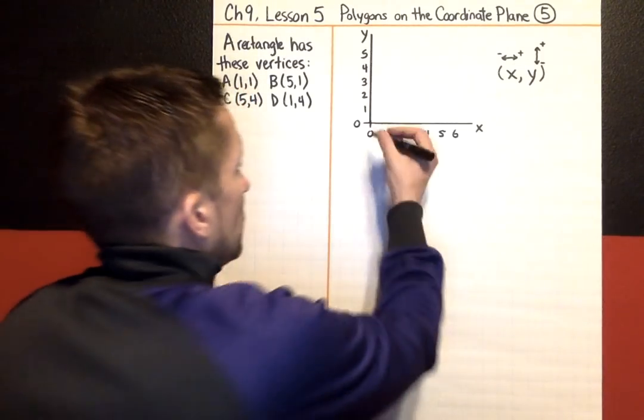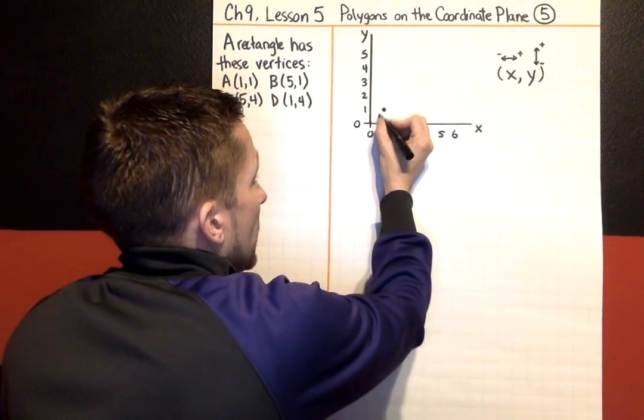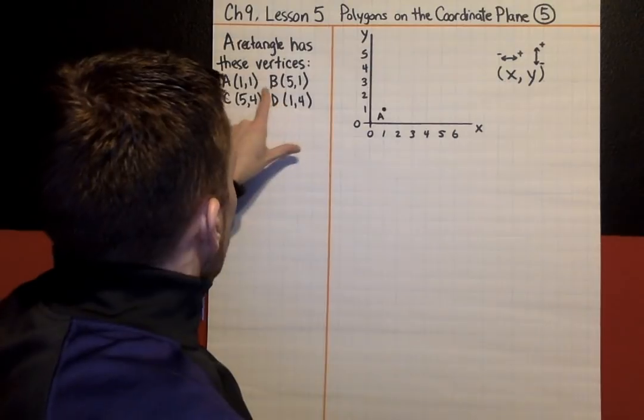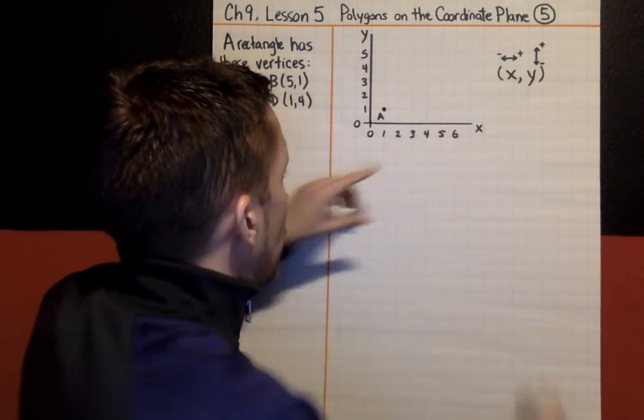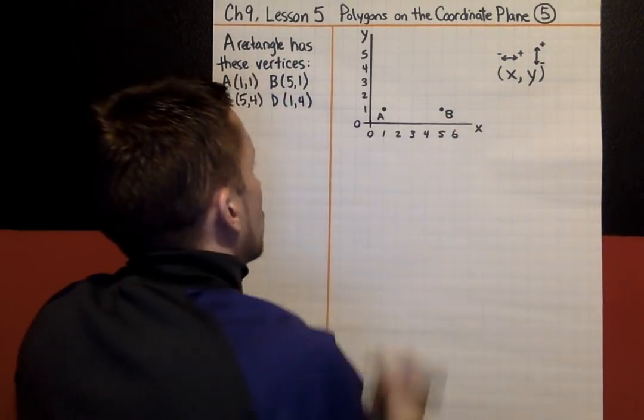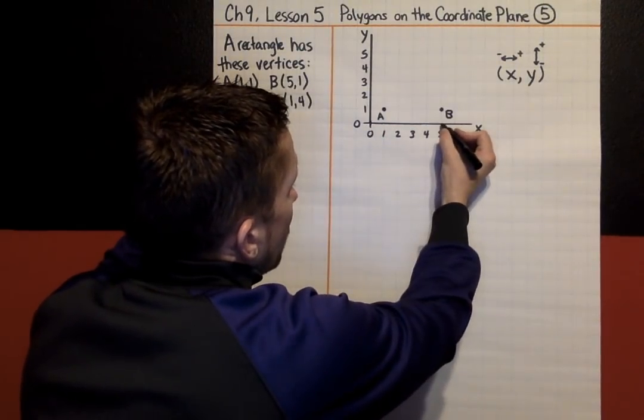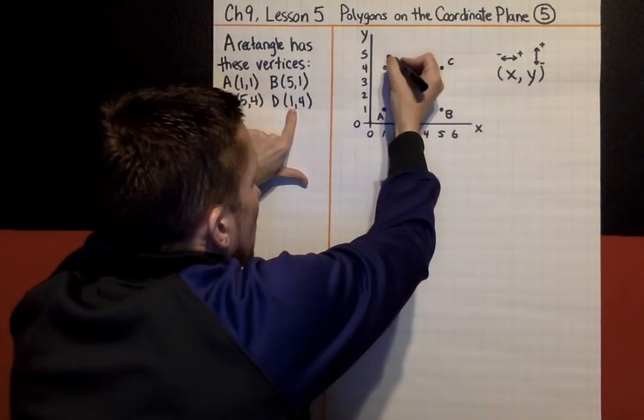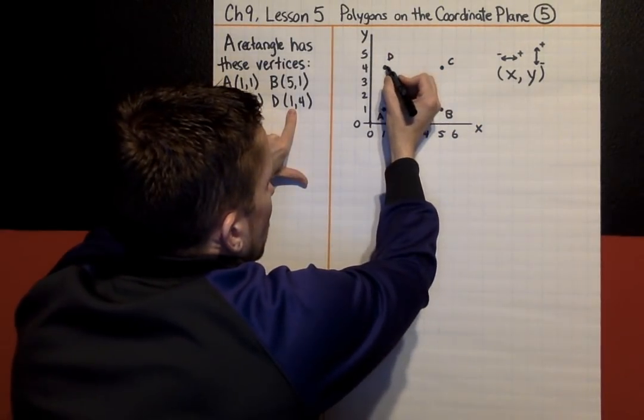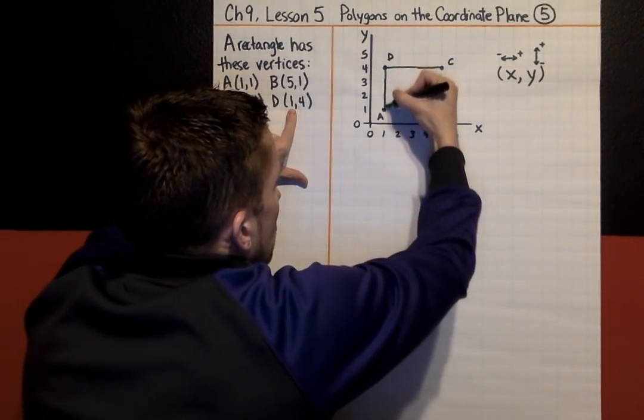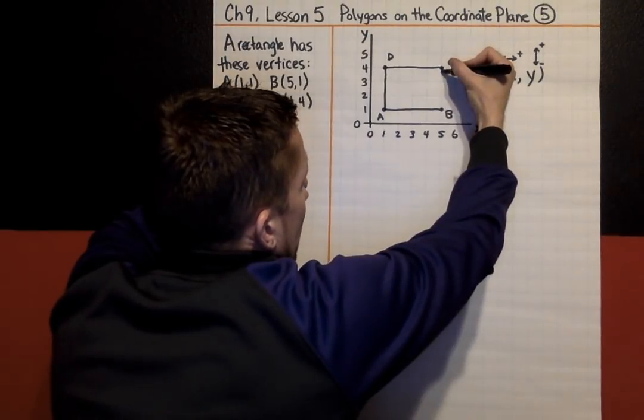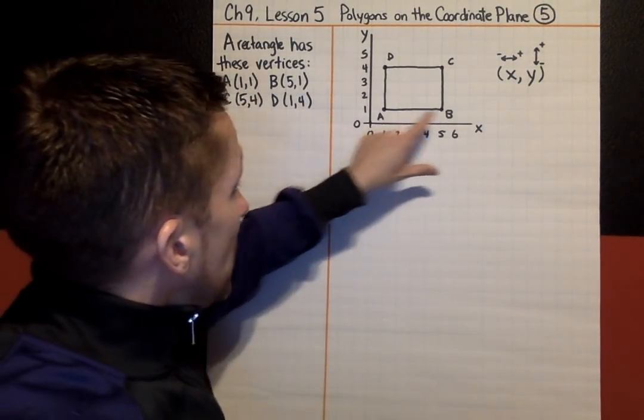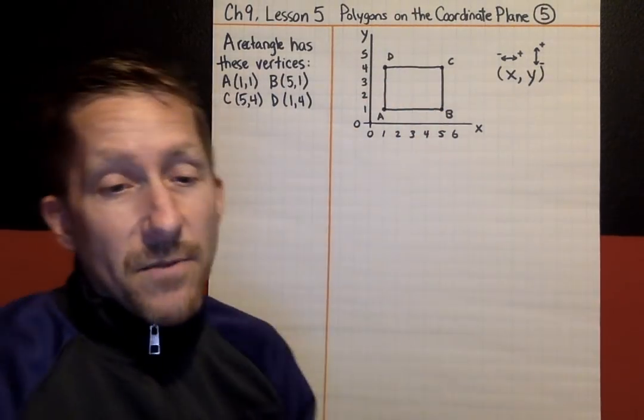Now let's get these vertices on our coordinate plane. Point A is at (1,1), so I'm going to go over 1, up 1, and I'll label that A. And B is at (5,1), so I'm going to go over 5 - 1, 2, 3, 4, 5, up 1. This is point B, or vertex B. Point C is (5,4), over 5, up 4. And finally, D is over 1, up 4. So, here's D. It told us that this made a rectangle. So, if we put our vertices onto the coordinate plane and it did not make a rectangle, right away we would know that something's not right.